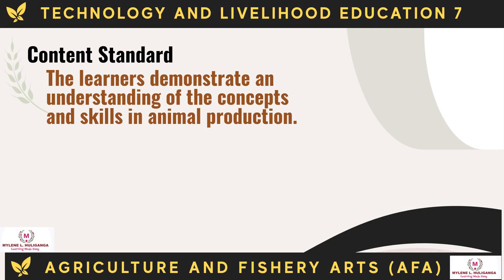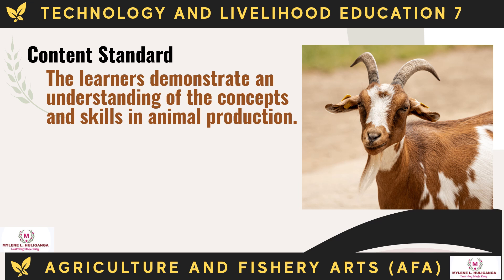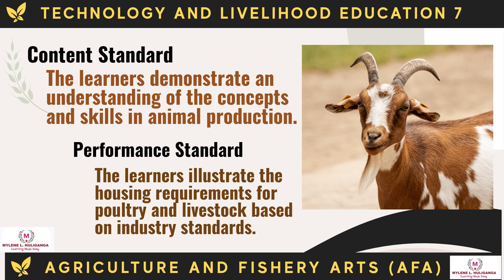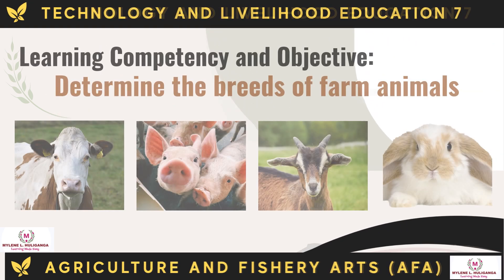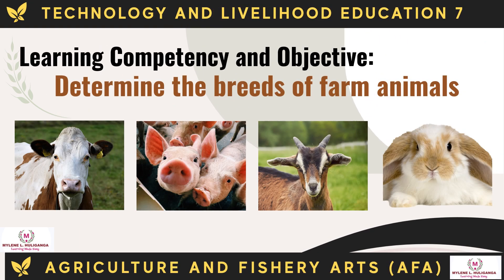The content standard is: the learners demonstrate an understanding of the concepts and skills in animal production. The performance standard is: the learners illustrate the housing requirements for poultry and livestock based on industry standards. The learning competency and objective is: the learners will determine the breeds of farm animals.